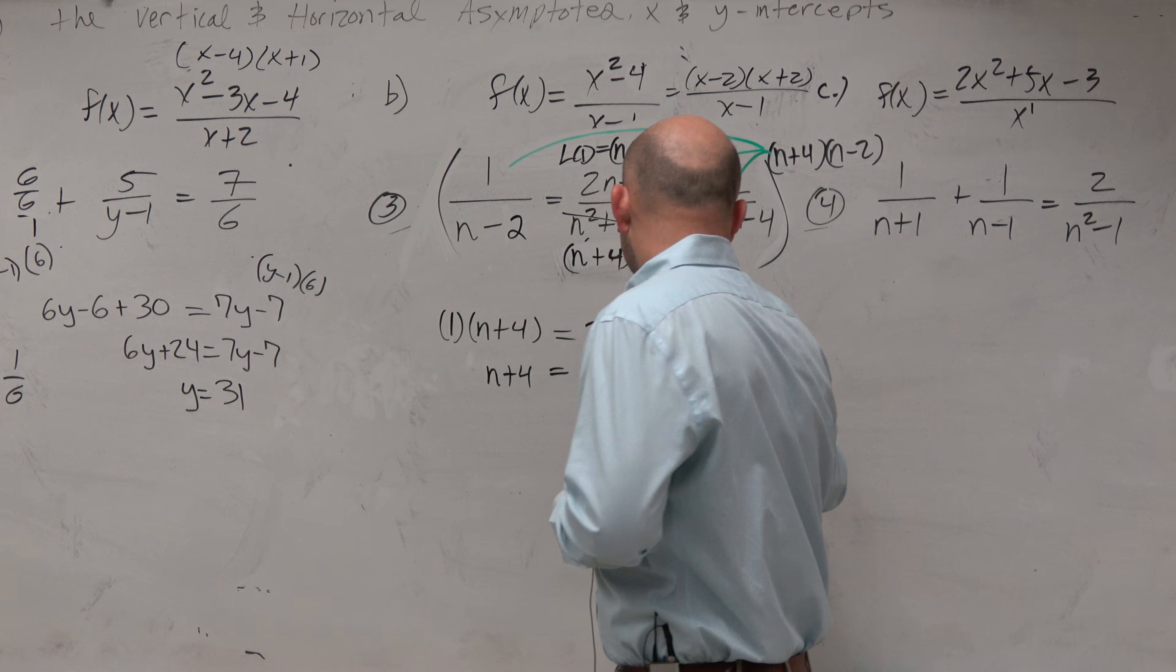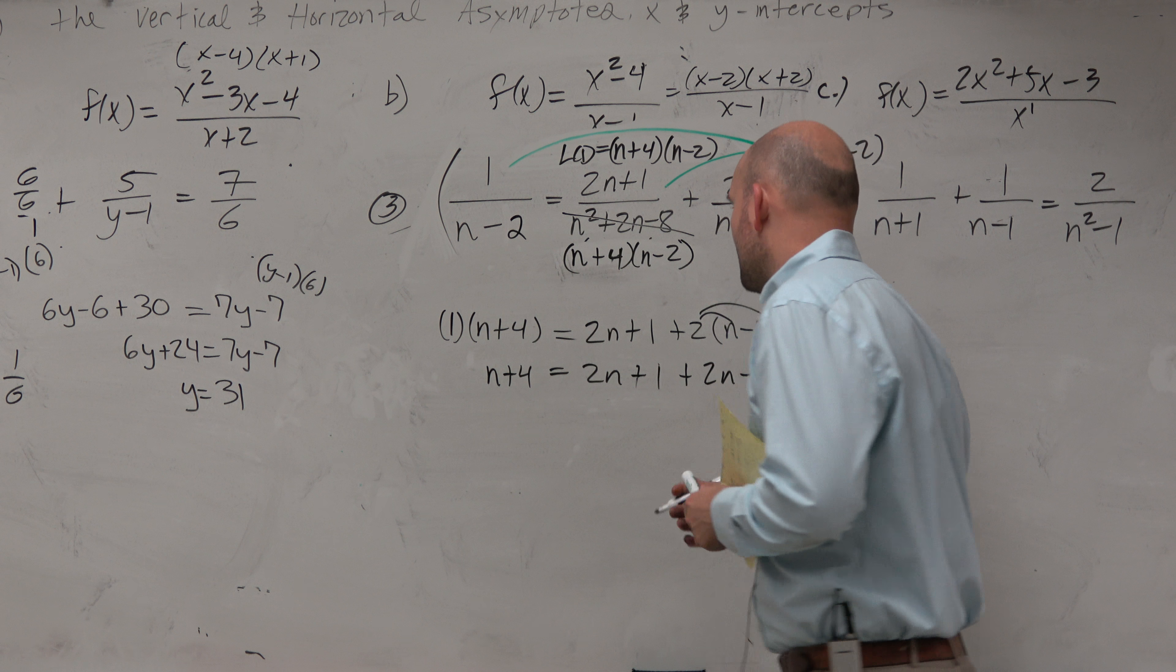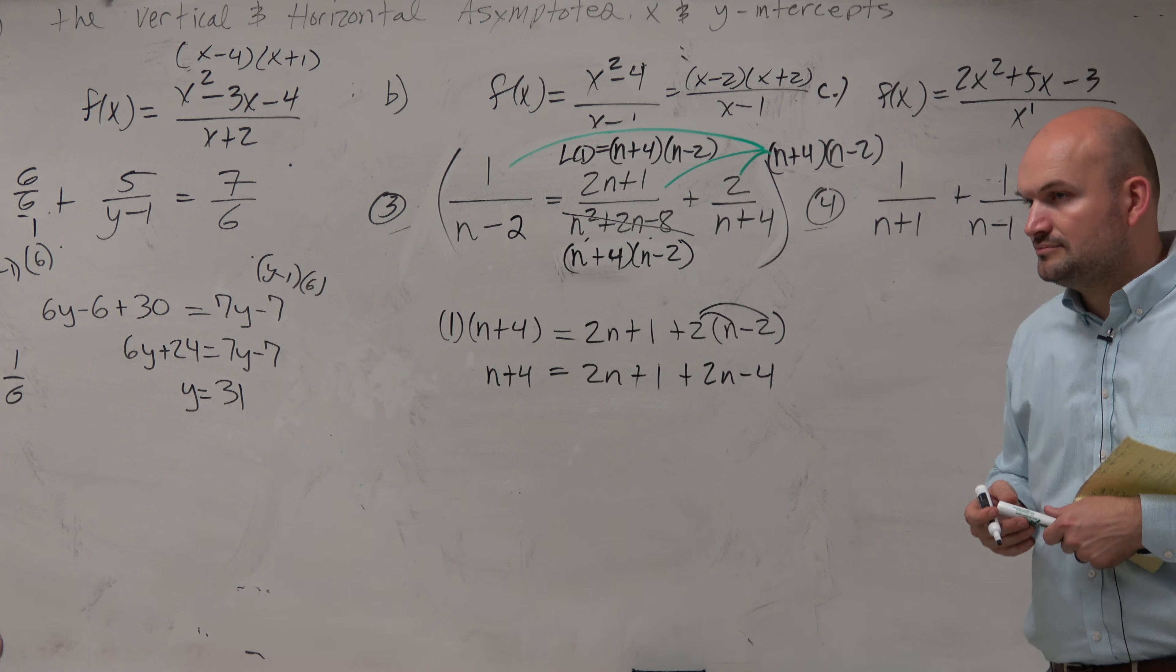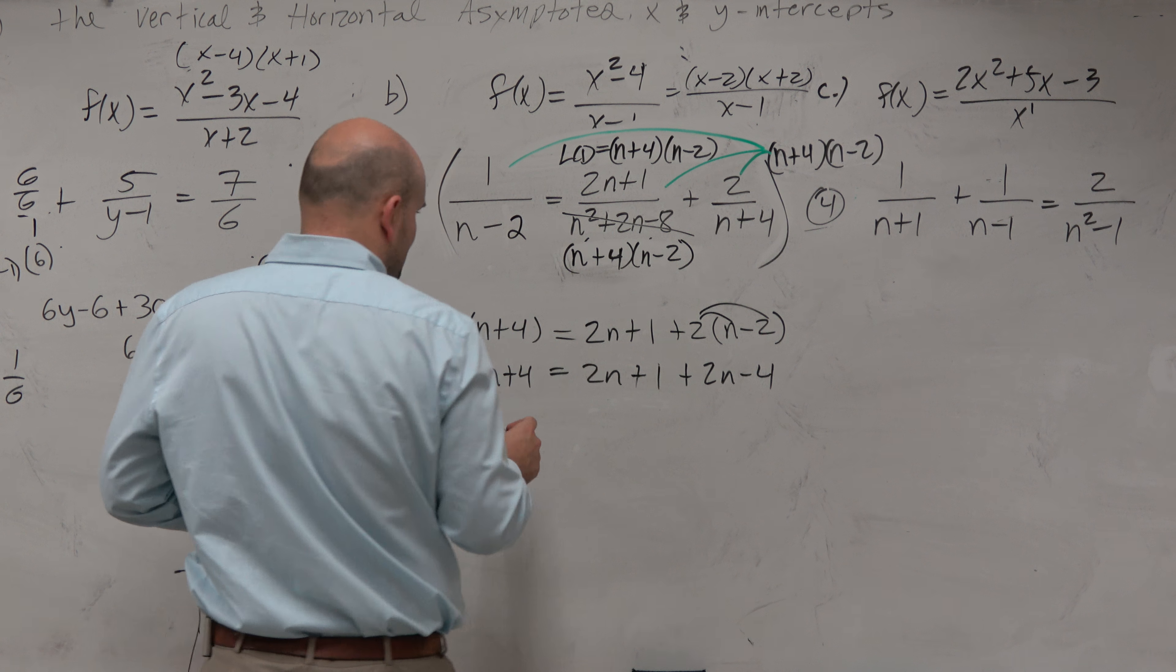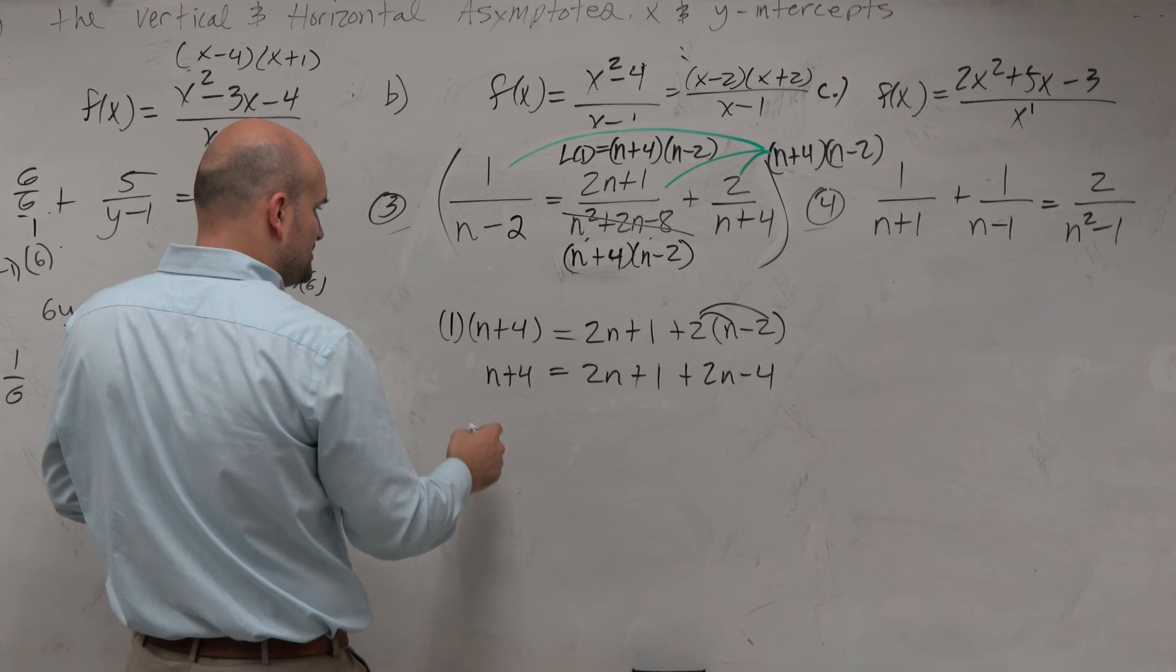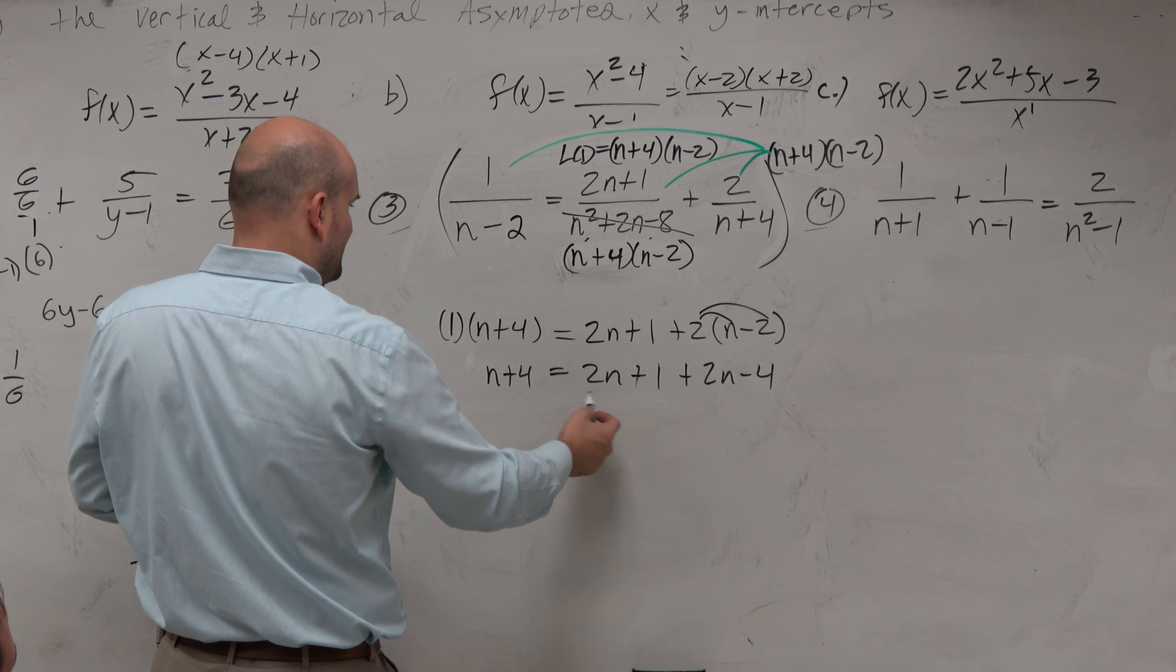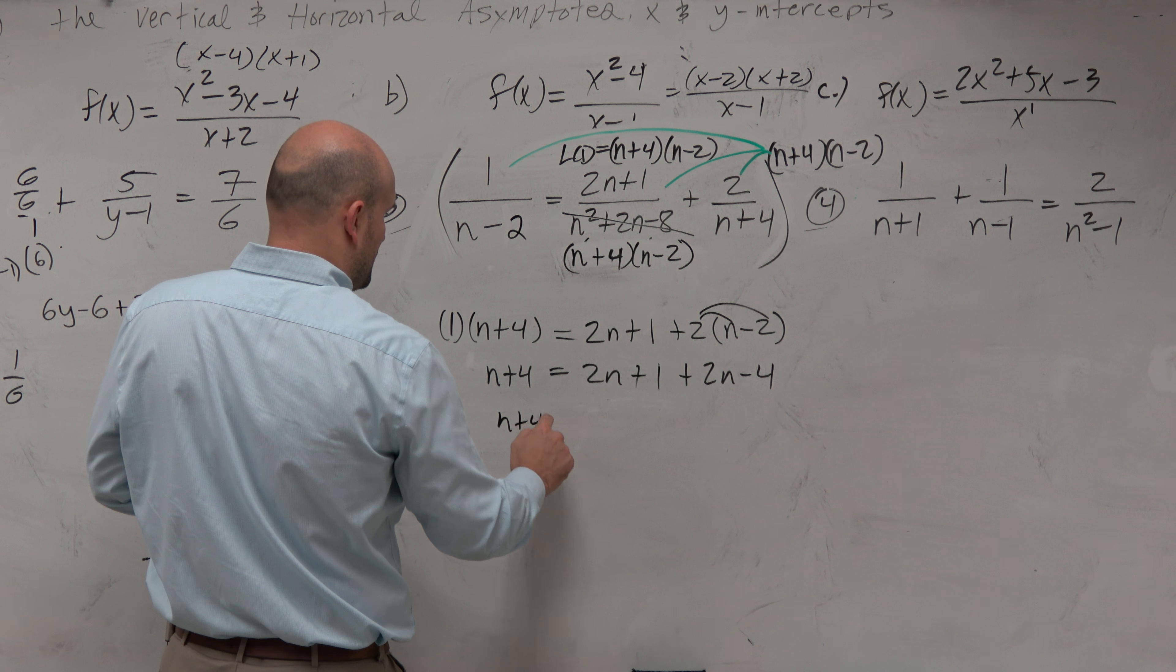Then, if I multiply this times that, you can see the n plus 4s would divide out, and you're just left with 2 times n minus 2. If you don't put the parentheses there, then you're going to get it wrong, right? Because that's 2n minus 4.